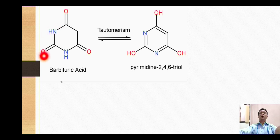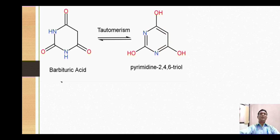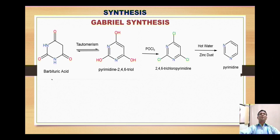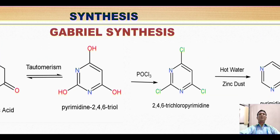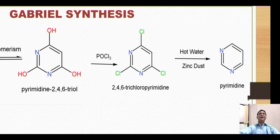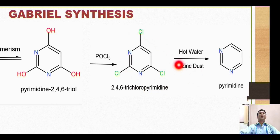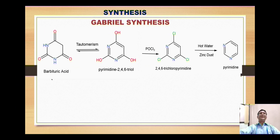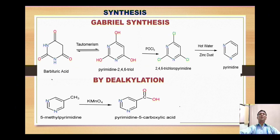The hydrogens migrate onto the oxygens, the double bonds are broken down and new double bonds are generated to form this aromatic nucleus. This triol derivative is then reacted with phosphorous oxychloride (POCl₃). The chloride ion brings about nucleophilic substitution of the three hydroxy groups to form 2,4,6-trichloropyrimidine. This derivative is then reacted with zinc dust in presence of hot water. The zinc eliminates the chlorine as zinc chloride, giving the formation of pure pyrimidine nucleus.